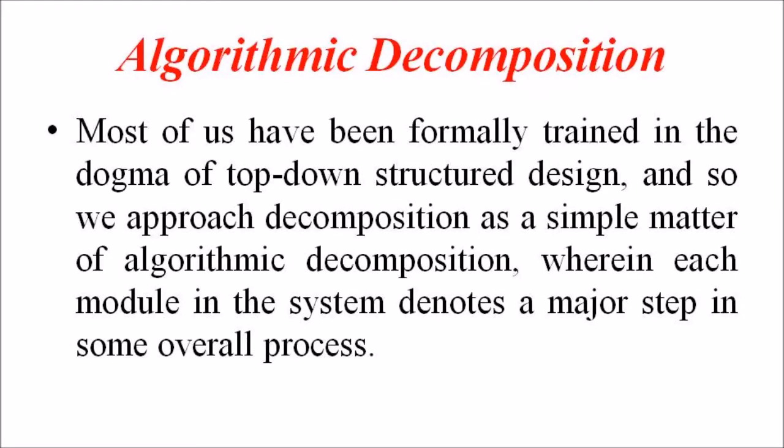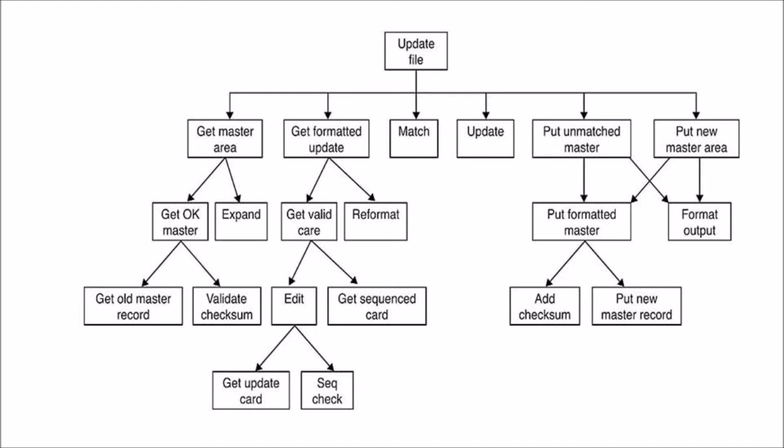When it comes to algorithmic decomposition, most of us have been formally trained in the dogma of top-down structured design, and so we approach decomposition as a simple matter of algorithmic decomposition, wherein each module in the system denotes a major step in some overall process. This figure shows an example of a structure chart that illustrates the relationship among various functional elements of the solution. This particular structure chart shows part of the design of a program that updates the content of a master file, automatically generated from a data flow diagram by an expert system tool.